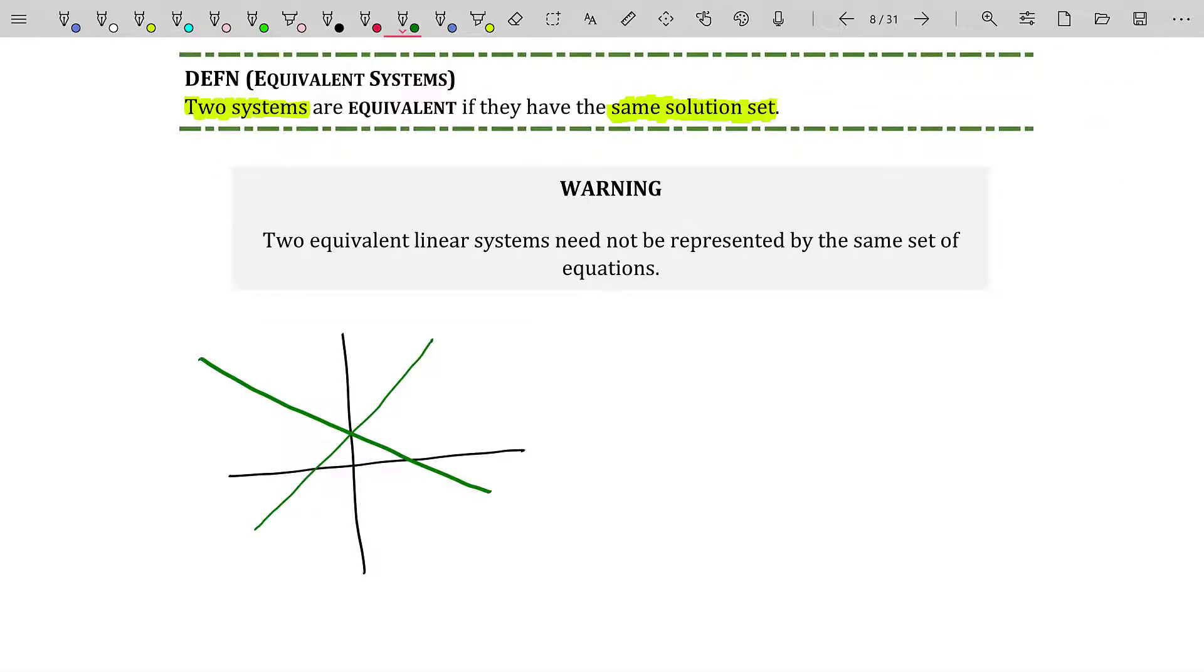So you may have a system with these two lines right here, and notice they intersect only at one spot, right? And so there we go. That's the solution set. That point right there is a solution set for that system.